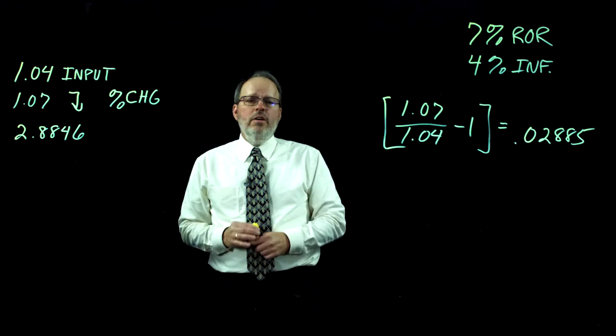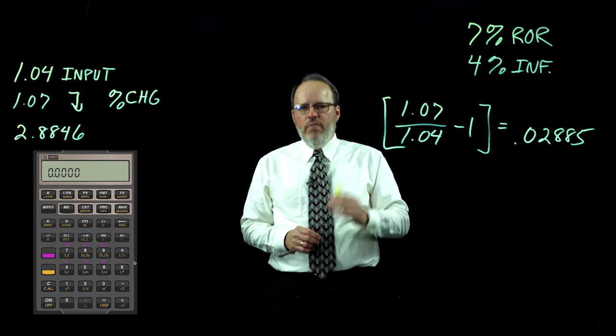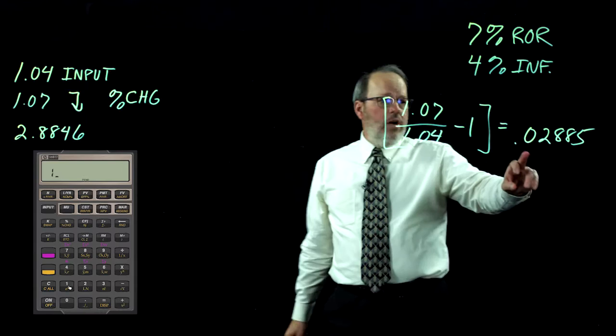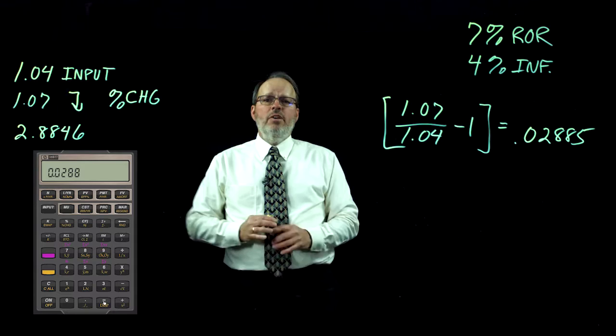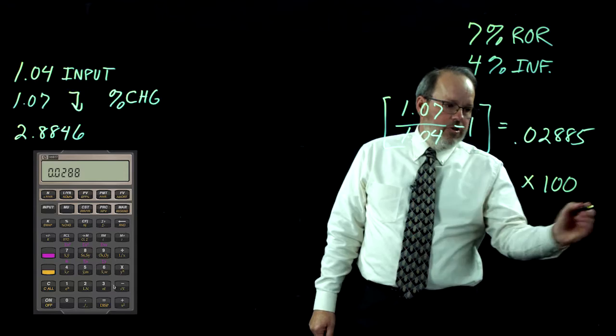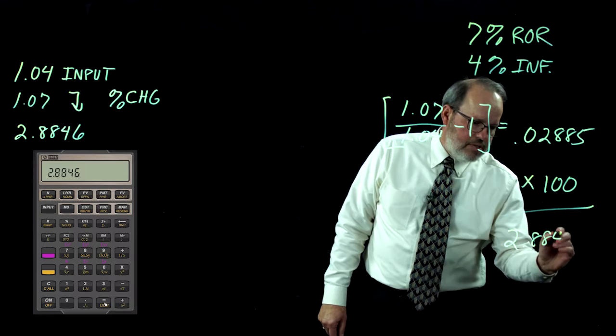So we use this formula: take 1 plus the rate of return divided by 1 plus the inflation rate — so 1.07 divided by 1.04 — then subtract 1 and hit equals. You'll come up with 0.02885. On our calculator, we always enter interest rates as whole numbers, so multiply this by 100. You should come up with 2.8846. That is our inflation-adjusted return: 2.8846%, not 3%.